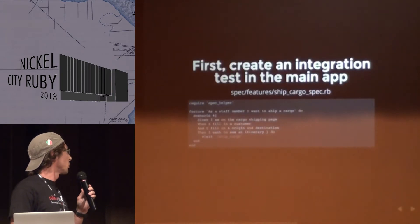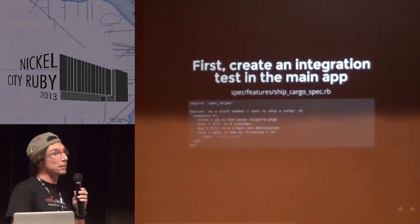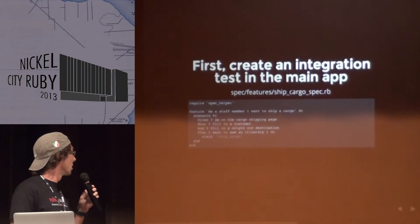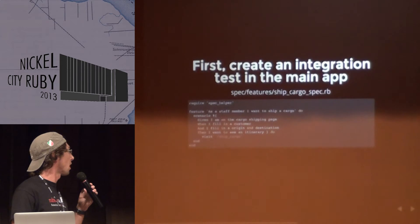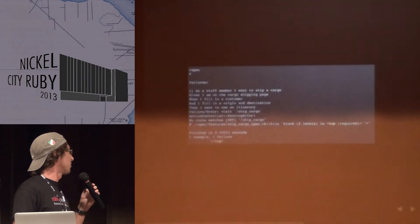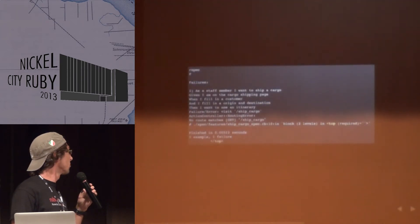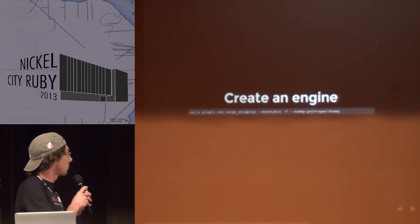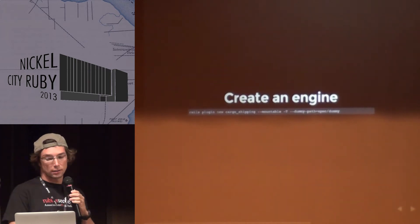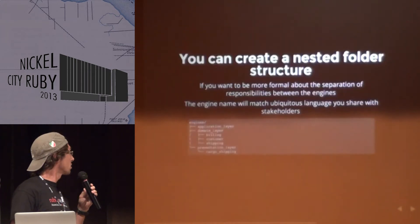First of all, we create an integration test in our main Rails application — just a normal feature spec that visits a ship cargo URL. The spec fails because there's no route matching that. So we're going to create a ship cargo engine. We use the normal 'rails plugin new' command with the name of the engine and the dummy app path for testing that engine in isolation.